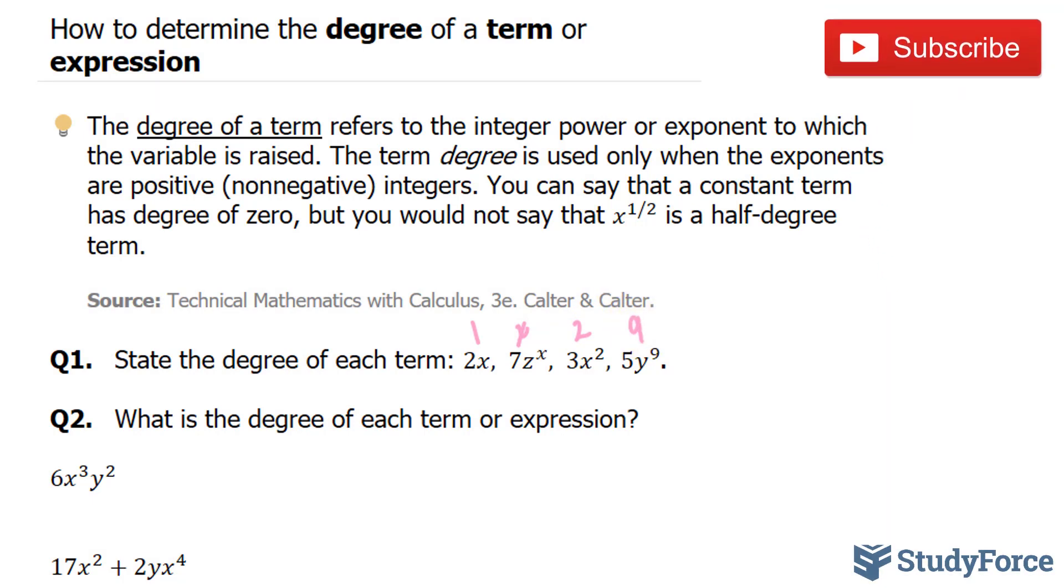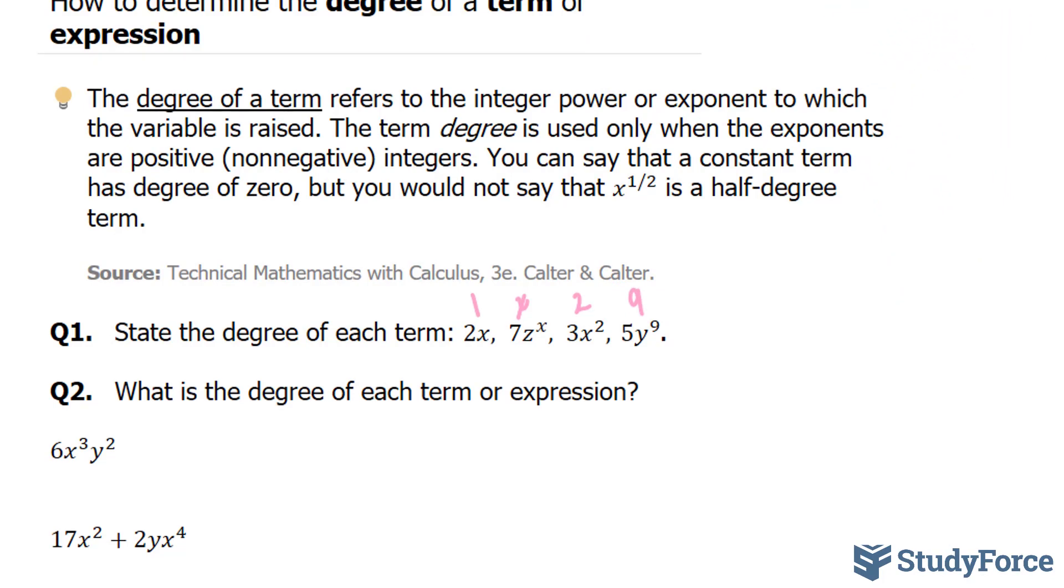Let's move on to question two. In question number two, they ask, what is the degree of each term or expression? Our expression here is 6x to the power of 3y to the power of 2.